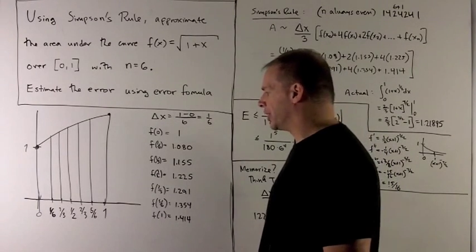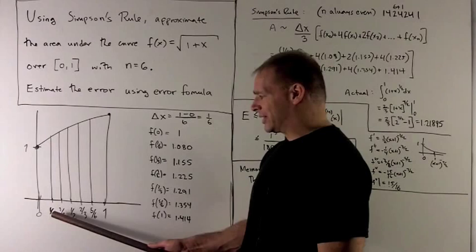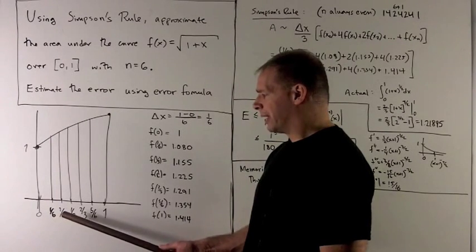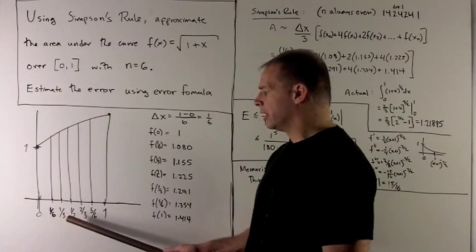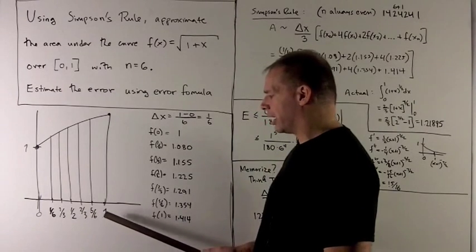So the points we'll be interested in are going to be start at 0, add a sixth, gets me 1 sixth, add another sixth, gets me 1 third, to a half, 2 thirds, 5 sixths, and 1.